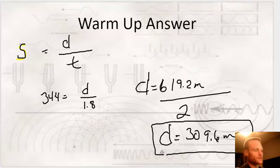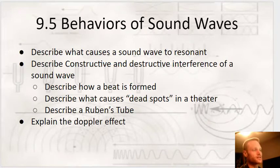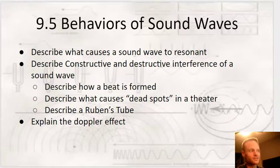If you're a note taker, grab your notebooks — we're going to go through some notes today. Today's notes are called 9.5 Behavior of Sound Waves. Our goals are: A, learn what causes a sound wave to resonate; continue our discussion about constructive and destructive interference with sound waves; talk about how beats are formed and what causes dead spots in theaters; I'm going to show you a video of something called a Rubin's Tube; and we're going to learn about the Doppler effect.